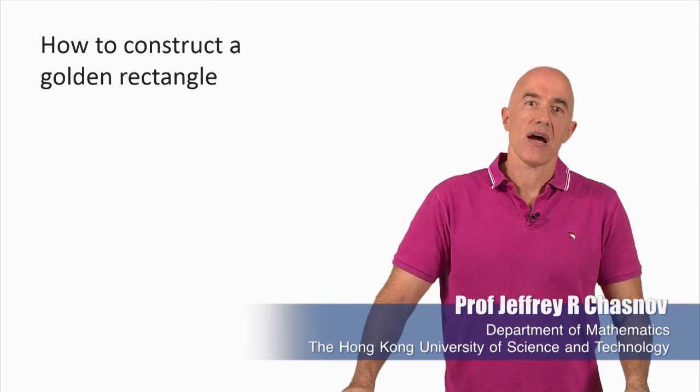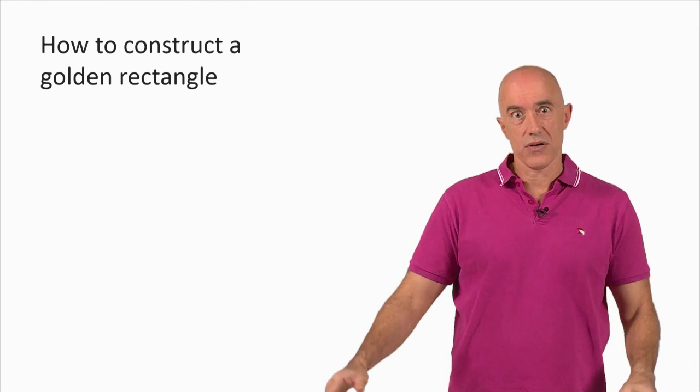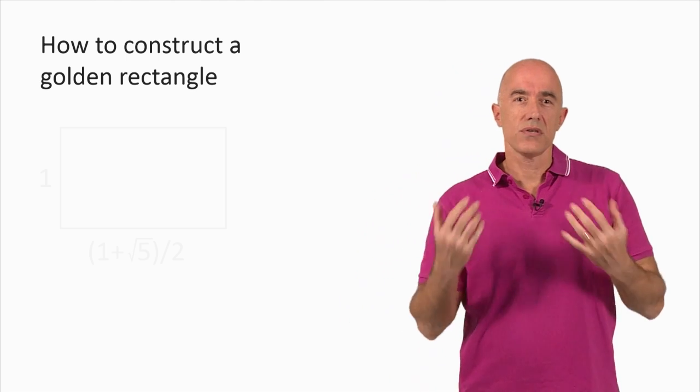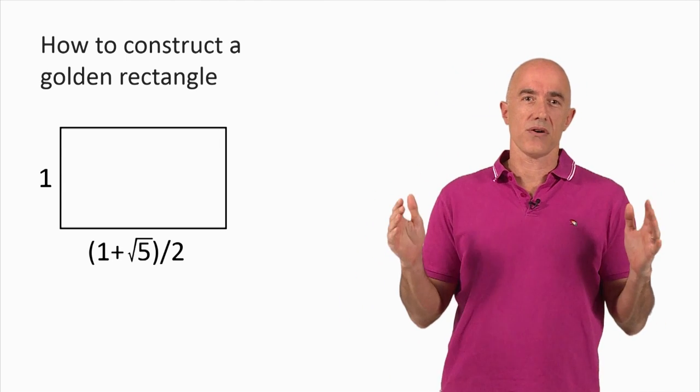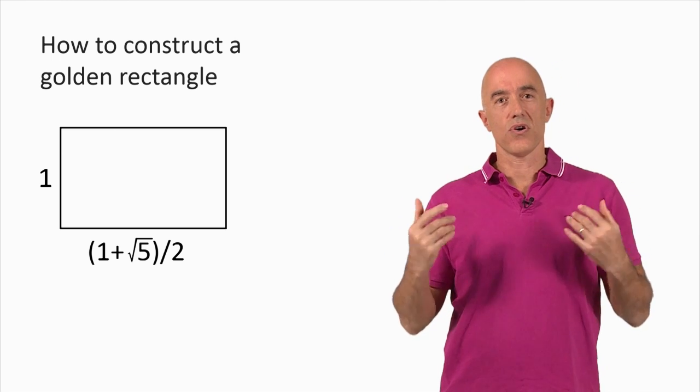Welcome back. In this lecture, I want to show you how to do a classical construction of a golden rectangle. What's a golden rectangle? A golden rectangle is a rectangle that has sides in the ratio of the golden ratio.